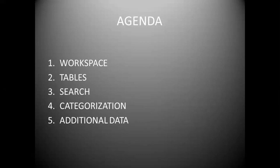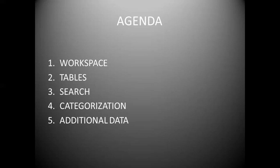We'll focus on five UI areas. First, the general workspace — how to arrange things in our application. Then, tables — how to make them more readable and easier to find data. Next is a short section about search and how we can use search input in different places. Then categorization, which is a very abstract concept but the basis of good UX. And finally, additional data — advanced options that are not the main focus but available to users who want more.